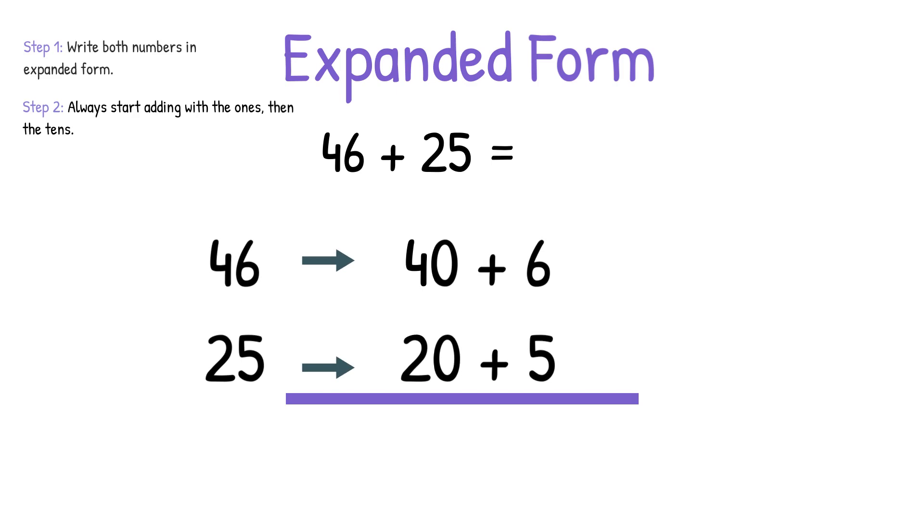Step 2 is always start adding with the 1s, then the 10s. So we're going to add 6 plus 5 equals 11, and then 40 plus 20 equals 60.